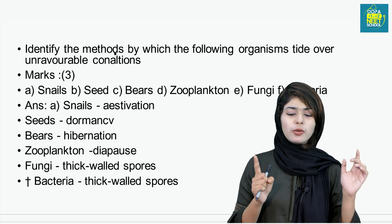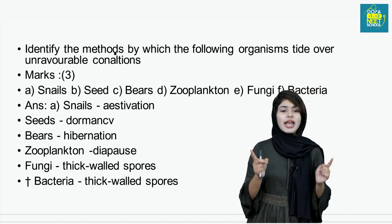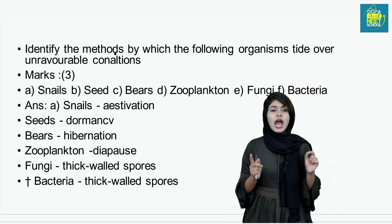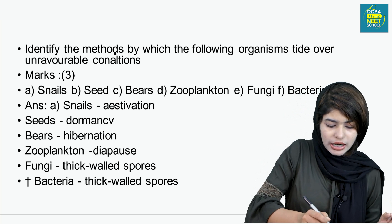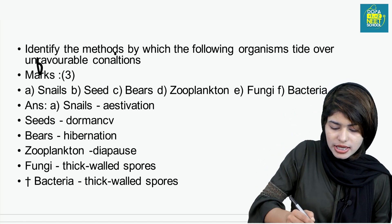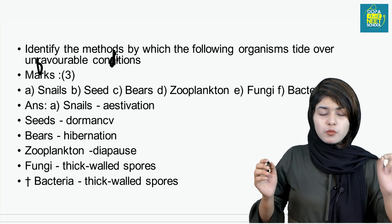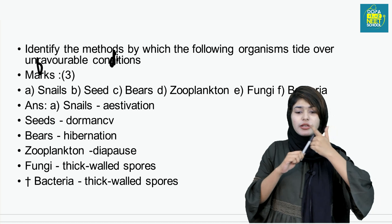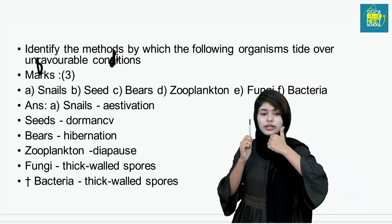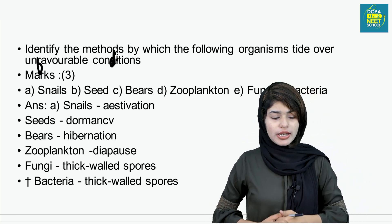Next: identify the methods by which the following organisms tide over unfavorable conditions. The organisms listed are snails, oat, bears, zooplankton, and fungi.